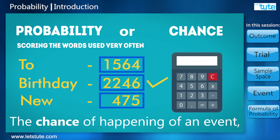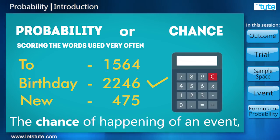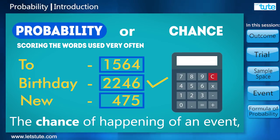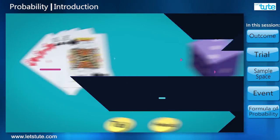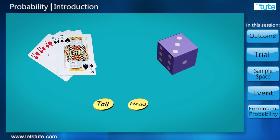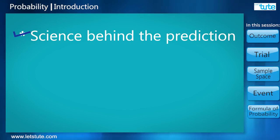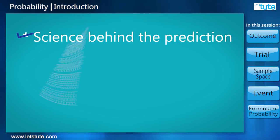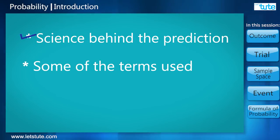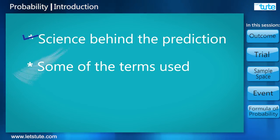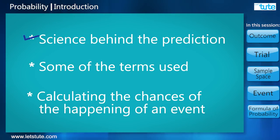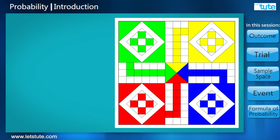The chance of happening of an event when expressed in terms of numbers is probability. Let's look at some simpler examples to understand what is the science behind the prediction, some of the terms used, and how do we calculate the chances of the happening of an event. Suppose we were to start a game of Ludo with a friend, and to decide who goes first, we toss a coin.